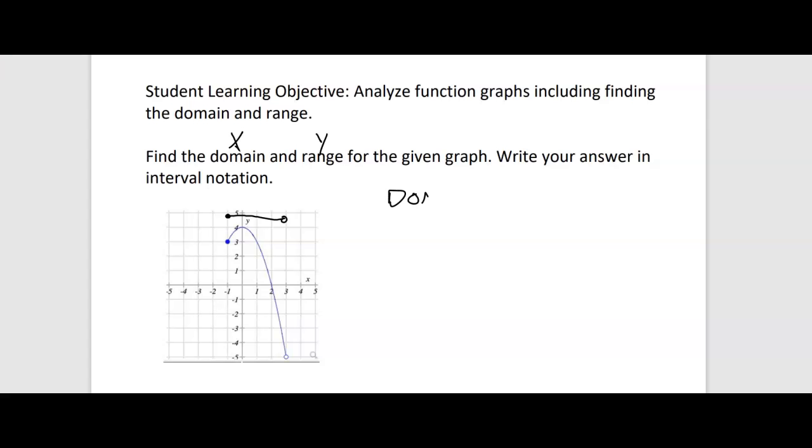So the domain, negative 1 to positive 3. The solid dot on the left, we have a hard bracket, and the hollow dot on the right, soft bracket. There is our domain.